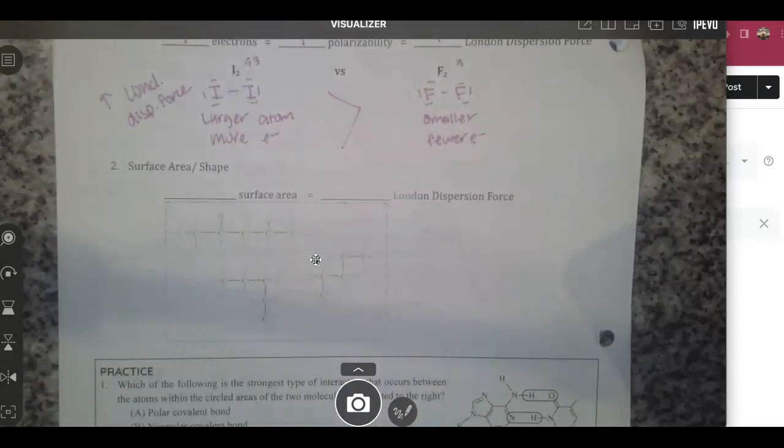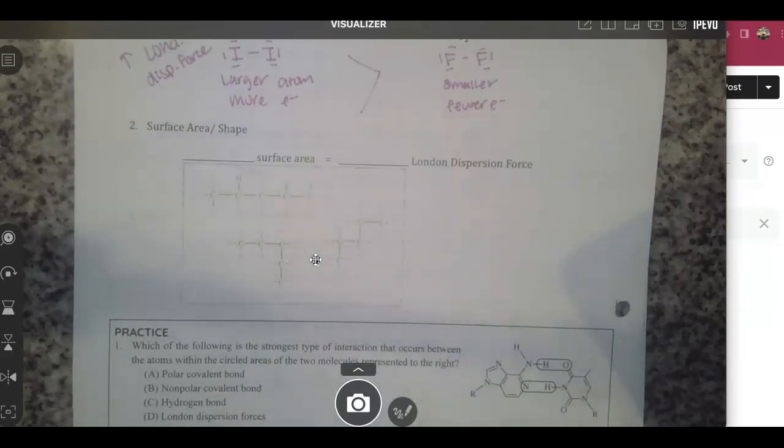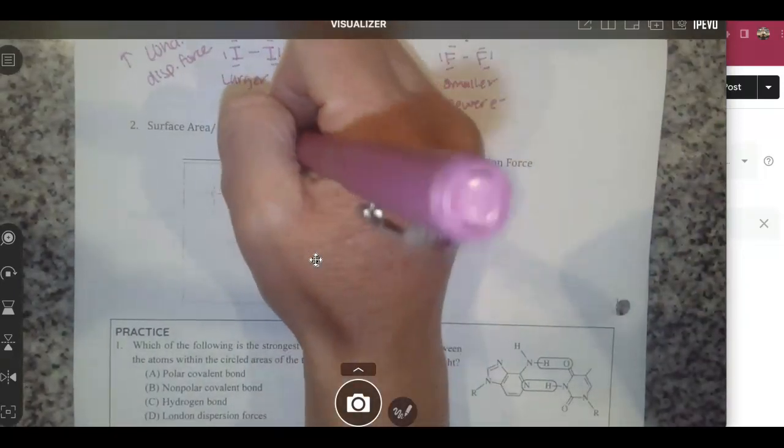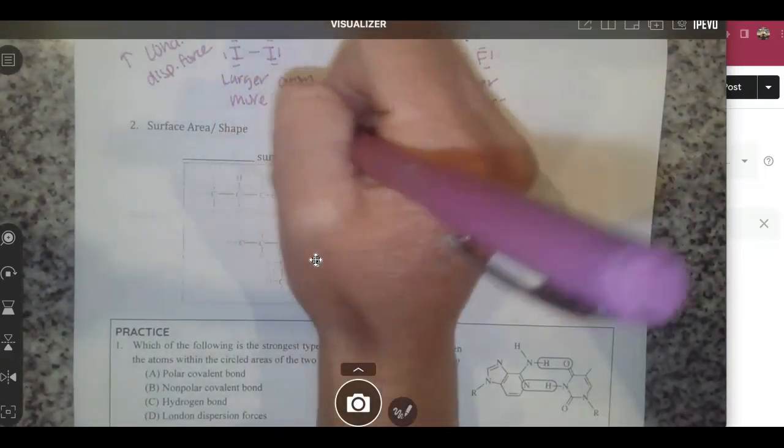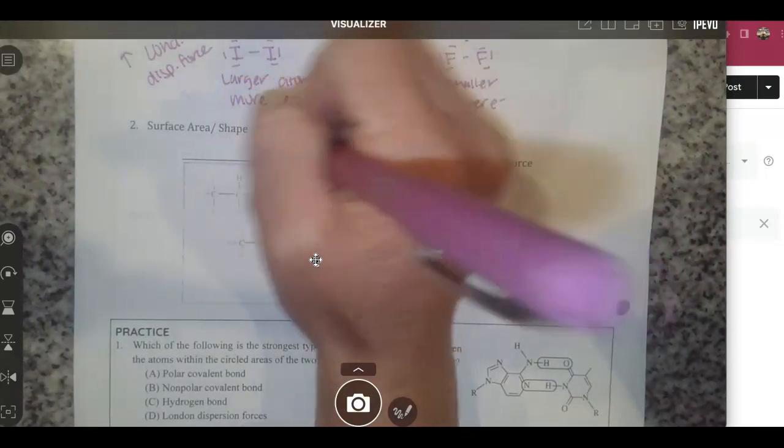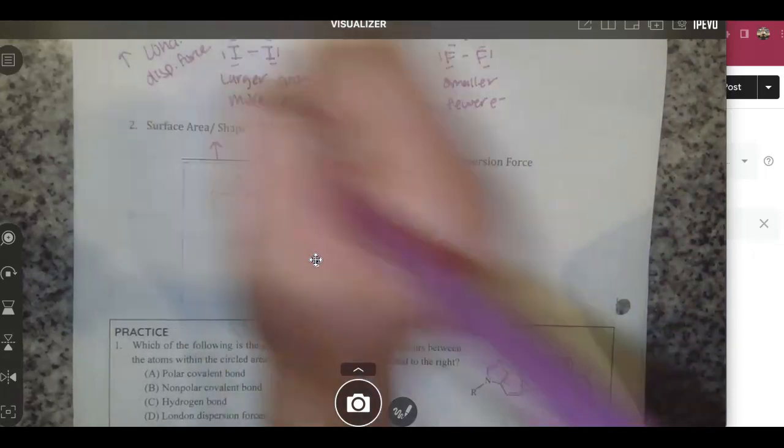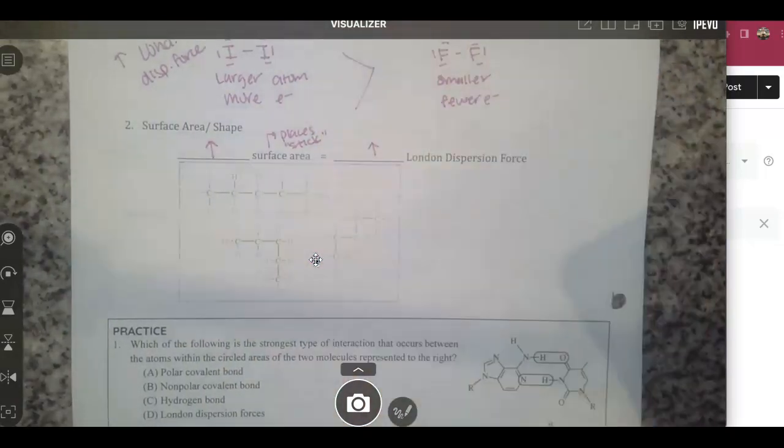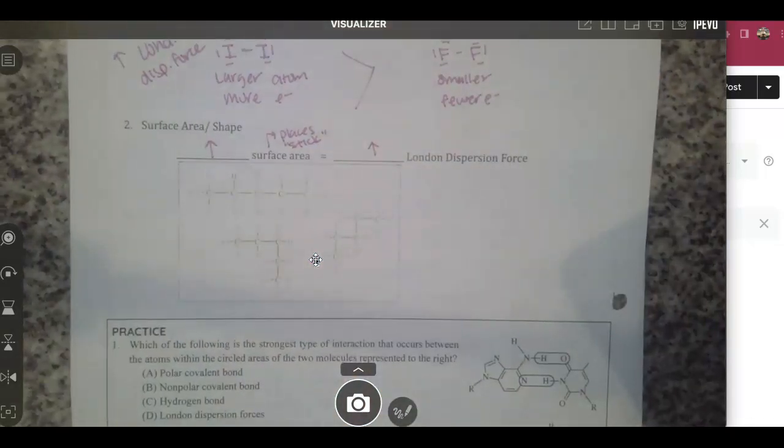And then we've also got surface area. Surface area will also determine the strength of a London dispersion force. Surface area is kind of like places - think about it as how many places do you have to stick another molecule to. The more surface area you have, the greater the London dispersion forces you will have because you have more places to stick molecules together.